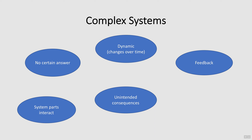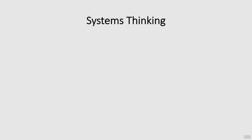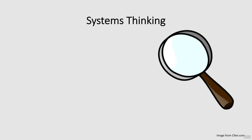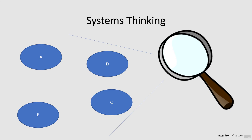When attempting to address a complex problem, it's important not to focus on only one part of the system, but rather consider the system as a whole. This sort of holistic approach is considered systems thinking. Systems thinking is a specific type of lens or approach that is well-suited to addressing complex problems. It is an approach that looks at the whole system and considers the dynamic nature and interconnectedness of the variables influencing the problem.